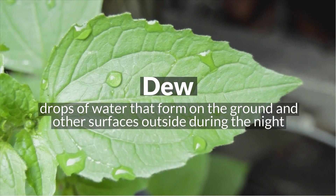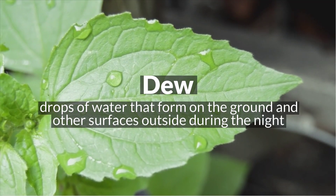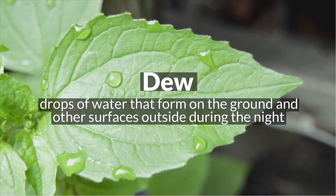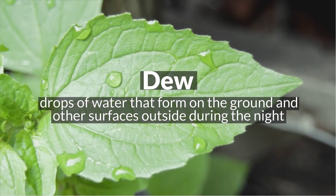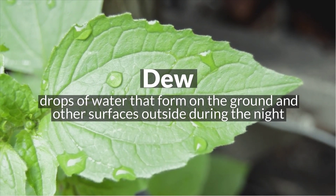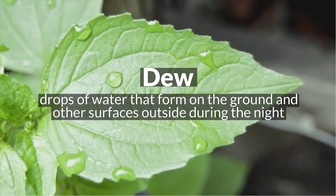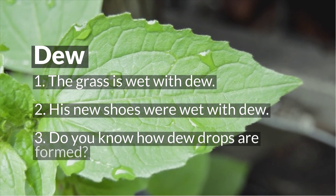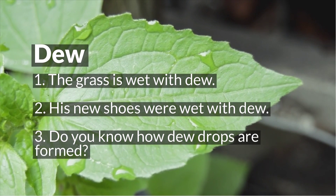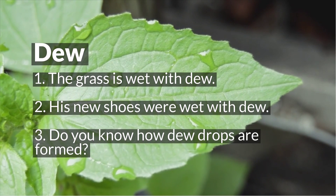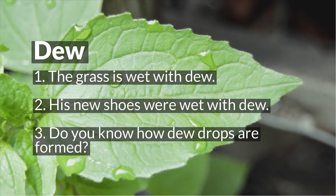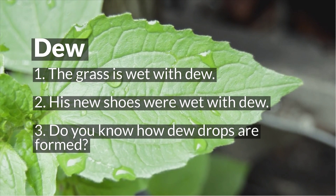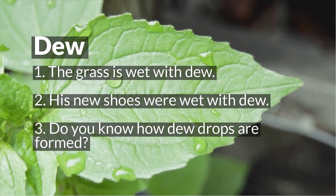Dew — as you can see in the background — are the drops of water that form on the ground and other surfaces like leaves and flowers, especially outside during the night in the rainy season. 'The grass is wet with dew.' 'His new shoes were wet with dew.' 'Do you know how dew drops are formed?'